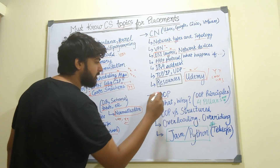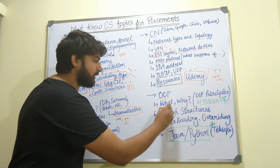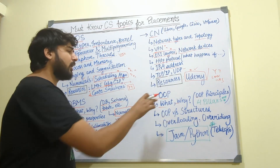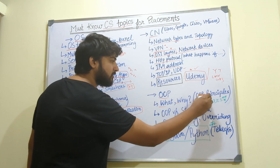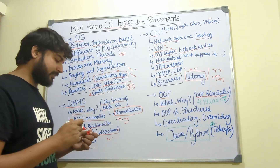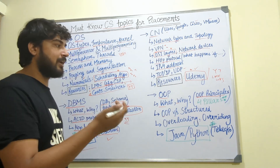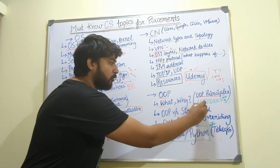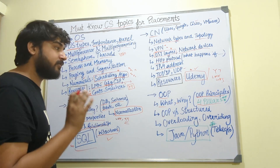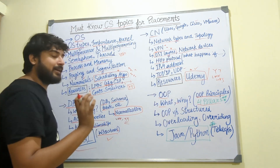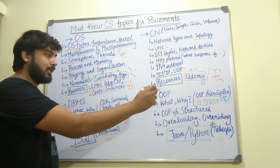The next important topic is object-oriented programming. The what and the why: what is OOP, why is it important, why do we need it when other options are available? Then you have OOP principles, which are extremely important. I've sat in the interviews of a lot of companies and there has not been a single technical interview where I was not asked about the four pillars of OOP or some question related to that. So the four pillars of object-oriented programming are very, very important — learn them by heart and understand them to the core.